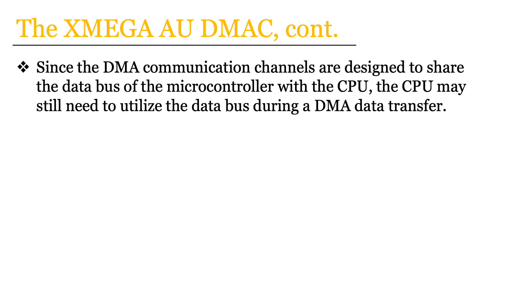One crucial thing to highlight is that the DMA communication channels utilize the data bus of the microcontroller — the same data bus that the CPU utilizes. So we have to recognize that with the sharing of the data bus between DMA communication channels and the CPU, there may easily be a case where the CPU needs the data bus during a DMA data transfer. We only have four communication channels for the DMA, and we can easily think of an application that needs more than four different types of data transfer. So in these cases we need to figure out: if the CPU needs the data bus during some DMA transfer, when does the CPU actually transfer its data?